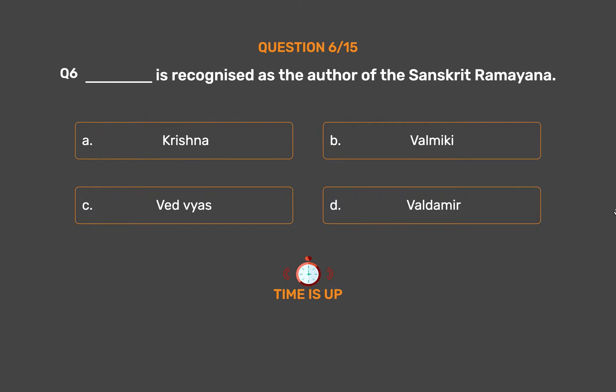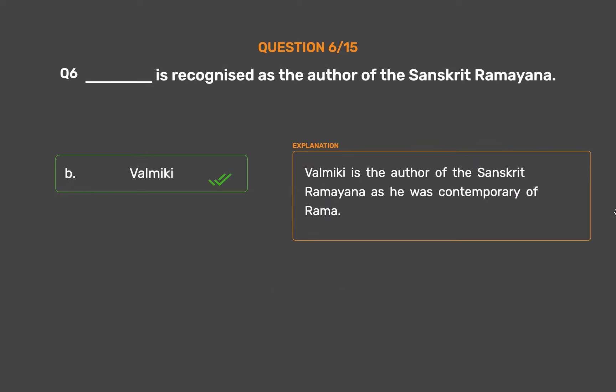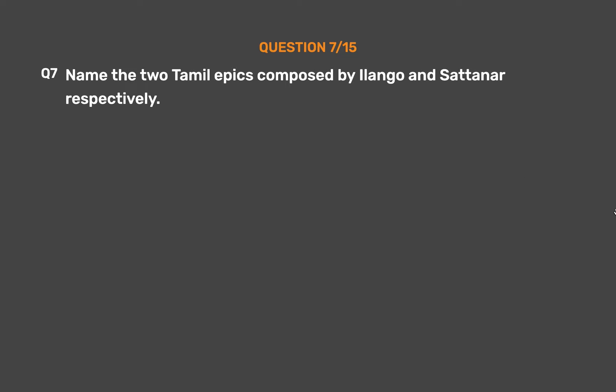The correct answer is Option B: Valmiki. Valmiki is the author of the Sanskrit Ramayana, as he was a contemporary of Rama.